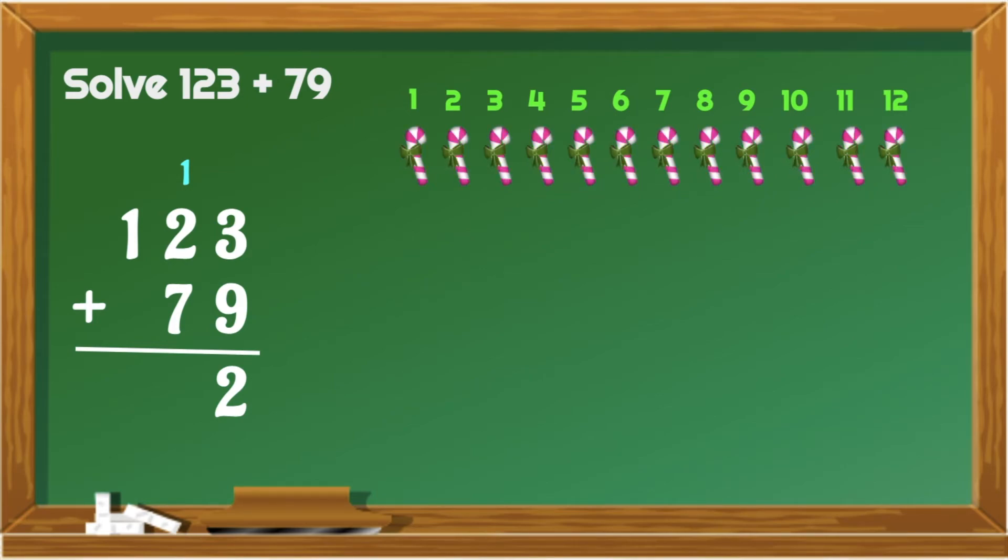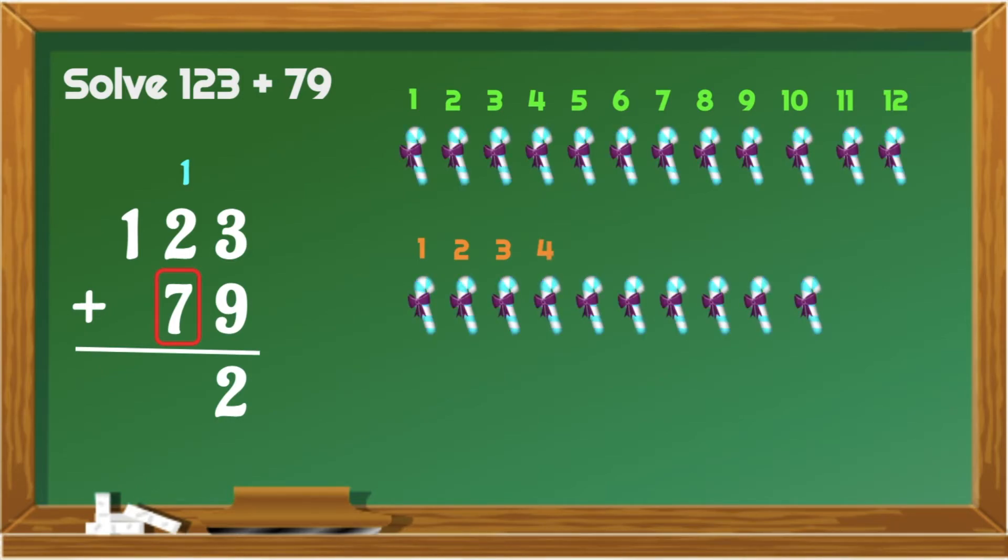Now, proceed with the tens column. That's 1 plus 2 plus 7. From 1, let's count on. 2, 3. Now, let's add 7 more. 4, 5, 6, 7, 8, 9, 10. Let's put 0 below 7 and carry 1 on top of 1.